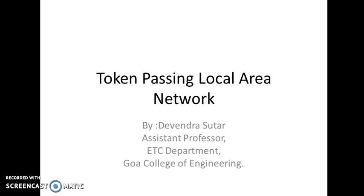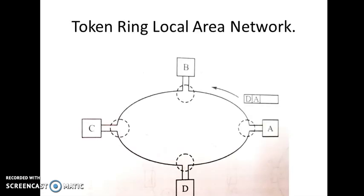In our workshop, at the start, the origin of internet and how transfer of data happens was very nicely discussed by eminent professors. I thought of choosing this topic as it will be an extension to those topics already discussed in the workshop. This topic is called Token Ring Local Area Network — discussing how data transfer happens in a local area network using the Token Ring method.